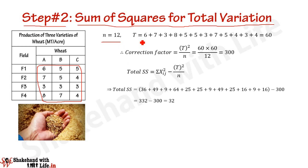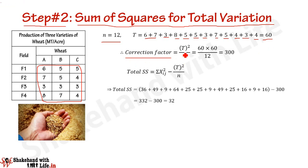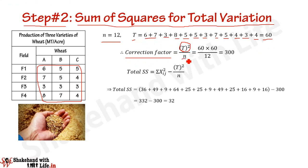T is the summation of all 12 elements: 6+7+3+8 = 24, plus 5+5+3+7 = 20, plus 5+4+3+4 = 16, giving T = 60. The correction factor is T²/N = 60 × 60 / 12 = 300.